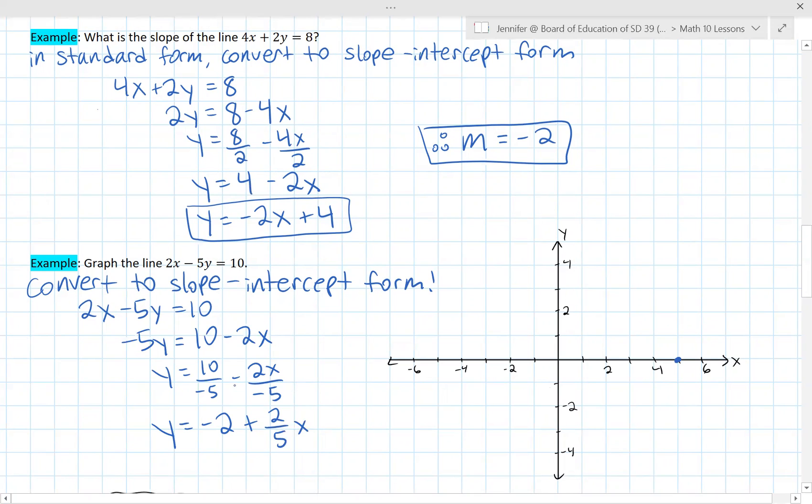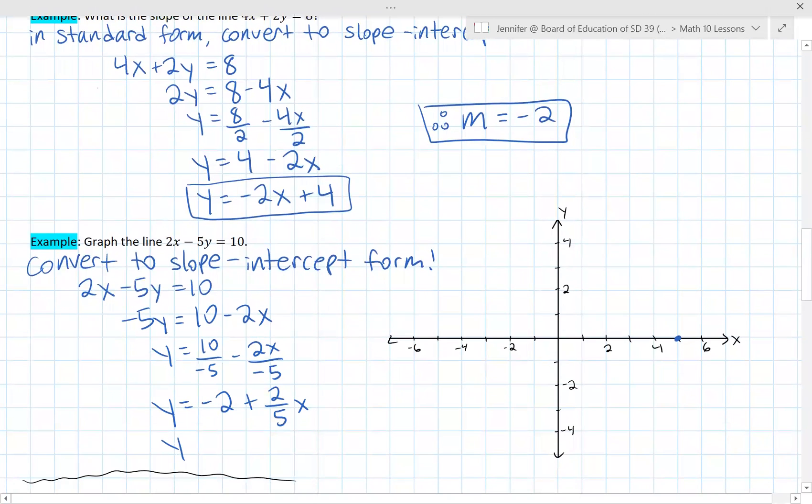That leaves us with negative 2 plus 2/5 x. This is plus because we have a double negative here and here. Lastly, we'll just rearrange it so that it's truly in our y equals mx plus b form. So the mx goes first and then the b. So there is the same equation but in a more useful form where our m is equal to 2/5 and our b is equal to negative 2.